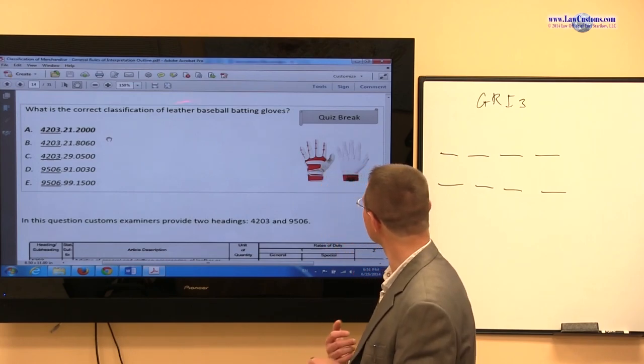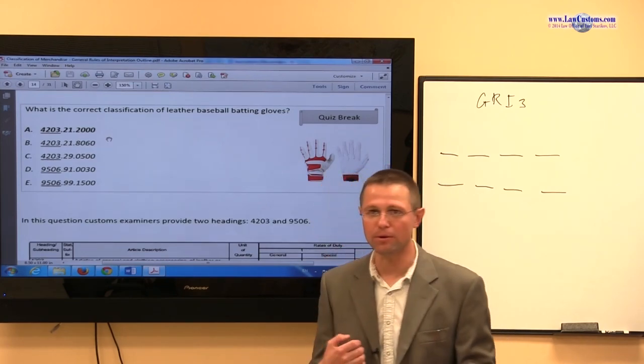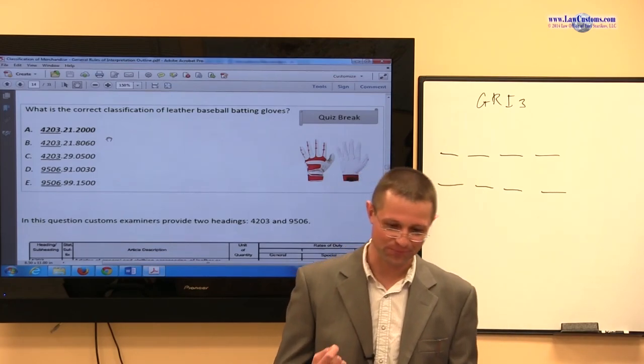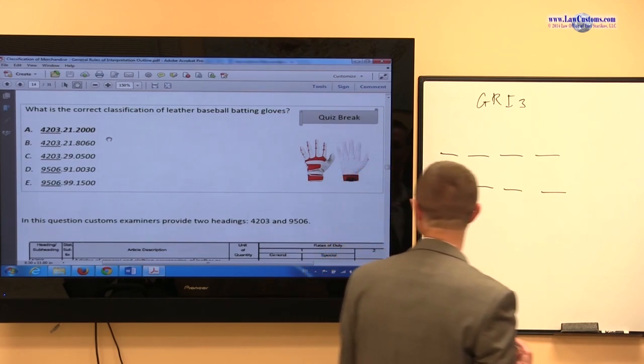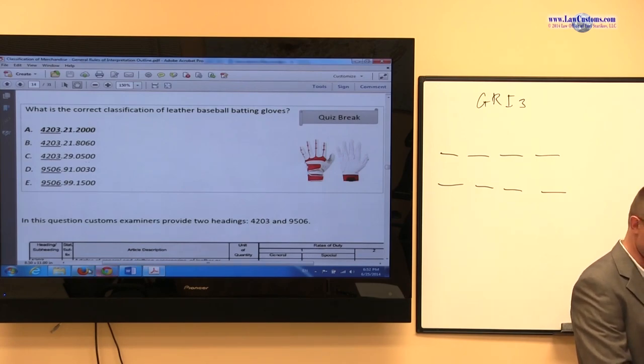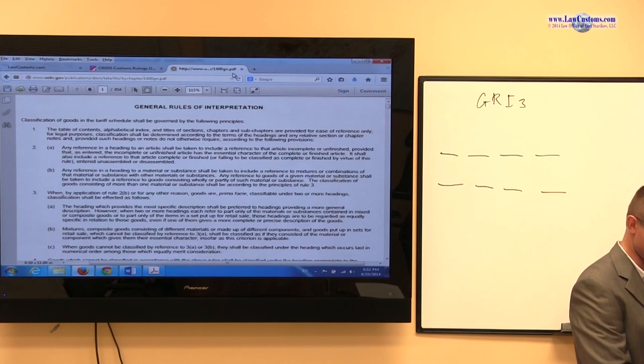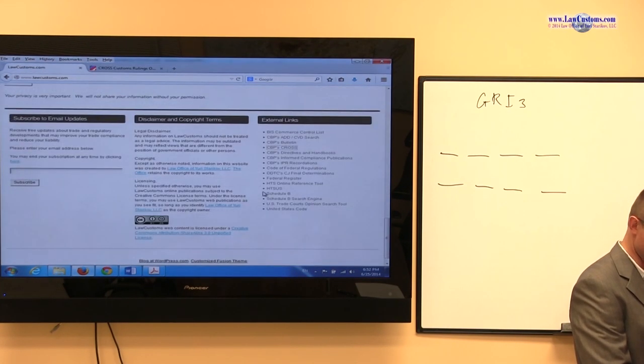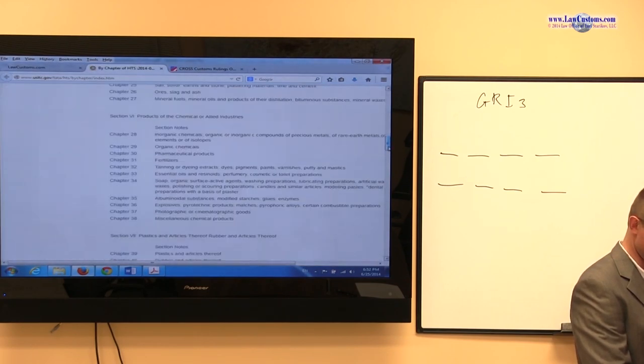In the case of this one, we do not need to go as far as GRI3. And the reason we do not need to go is because - well, first of all, let's take a look, 95.06. Let's take a look and see what 95.06 says. So 95.06, let's open up the harmonized tariff schedule. Go to chapter 95.